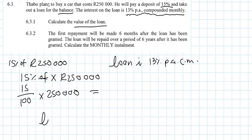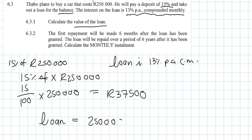15% of 250,000 comes to 37,500 — that's the deposit. So the loan amount is the original amount minus the 15% deposit. On the calculator, the loan amount is 212,500 rand — that's what he needs to borrow.